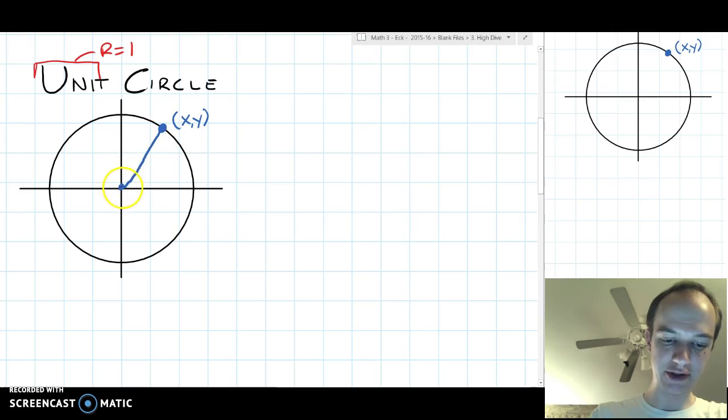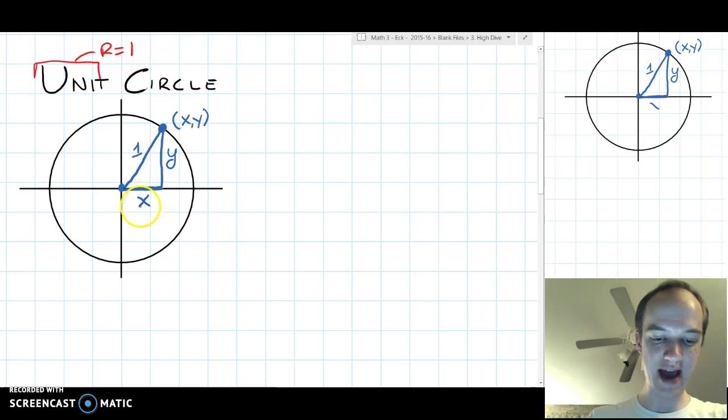We connect this to the origin like we do when we're usually making our triangles. This length is 1 unit. If we drop straight down to start making a triangle, this length then is going to be exactly the same as the y-coordinate.